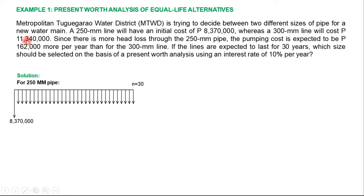The first cash flow is the initial cost: 11,340,000. Second is the pumping cost or operating cost of the 250 mm line. It was mentioned in the problem that the pumping cost for the 250 mm pipe is 162,000 more per year than the 300 mm line. Since the problem does not specify the pumping cost of the 300 mm line, we use the 300 mm line as our baseline reference. Therefore, the pumping cost for the 250 mm pipe will be 162,000.